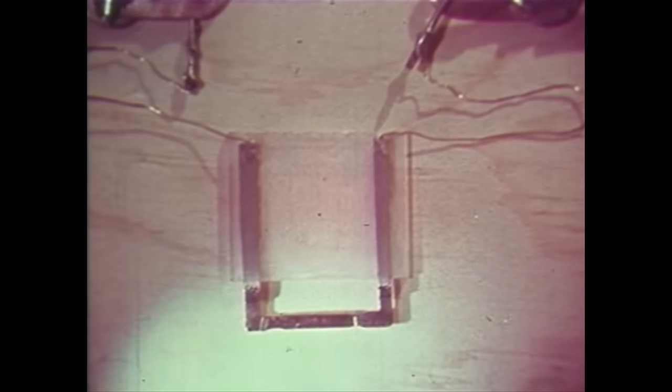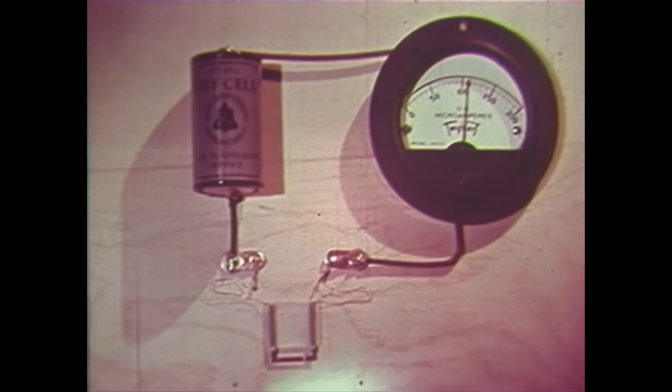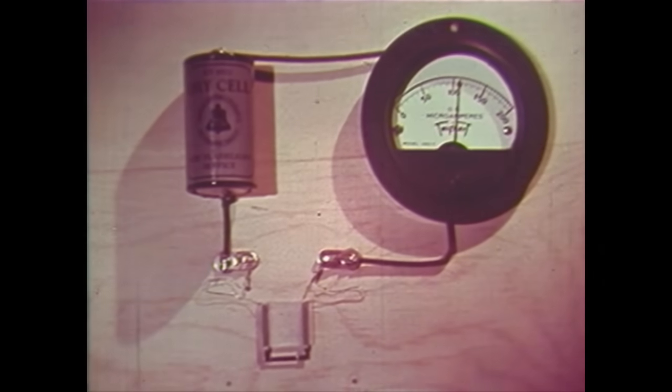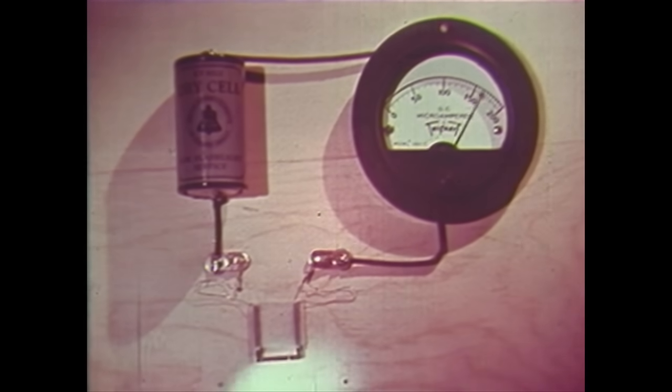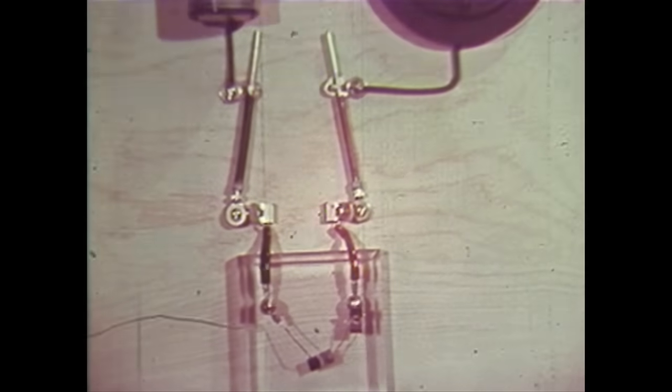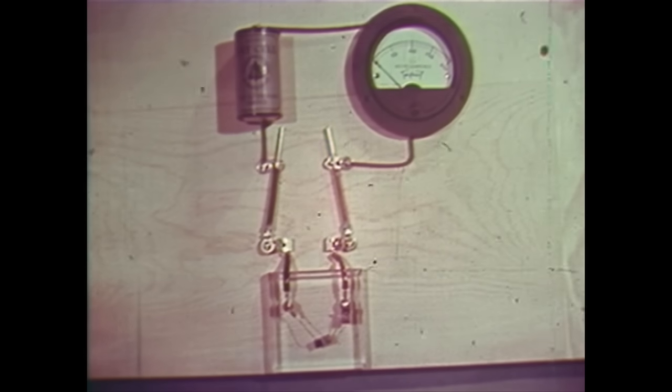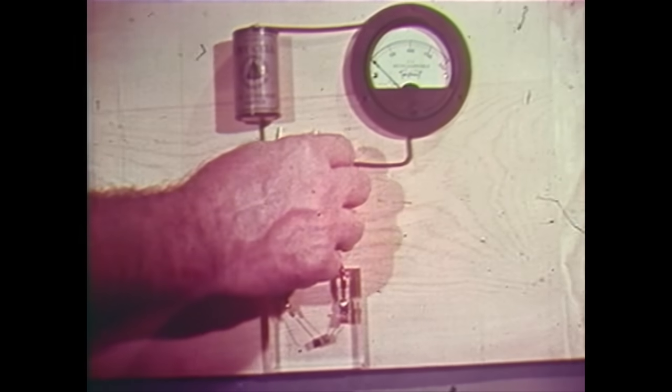Conductivity of semiconductors like germanium increases when they are exposed to light. Conductivity in a semiconductor, in this case a piece of germanium, is less in one direction than the other.